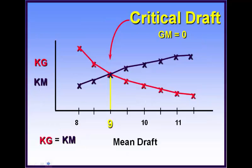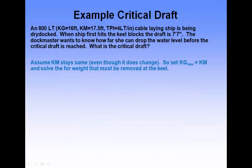There's a correlation: as KM increases, GM decreases until we reach a critical point where the mean draft would be the critical draft. For a more realistic example, a dock master wants to know how far the water level can drop before critical draft is reached — ideally so the dock master can haul the side blocks and not miss that window and have the vessel topple over. So we set KG_new equal to KM to find critical draft.